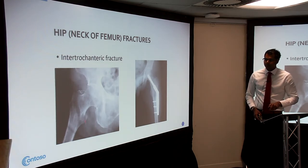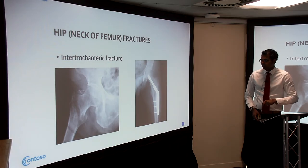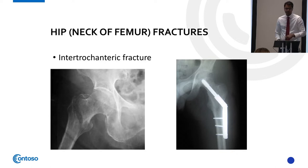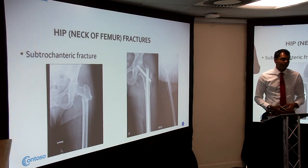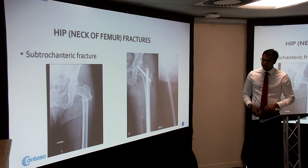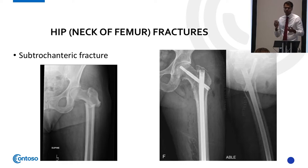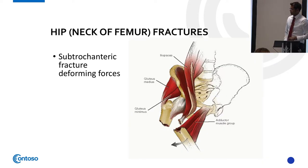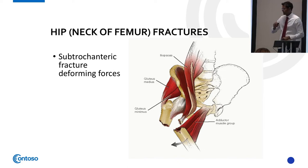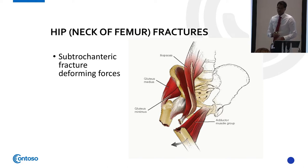For intertrochanteric fractures — outside the capsule — we use a DHS, a dynamic hip screw, which allows some controlled collapse. Done well this can take about 30 minutes. Subtrochanteric fractures are really tricky to stabilize because of the deforming forces: abductors on the greater trochanter pull the proximal fragment outward, iliopsoas pulls it forward, and adductors pull the shaft fragment inward. These strong muscle forces make reduction very difficult.